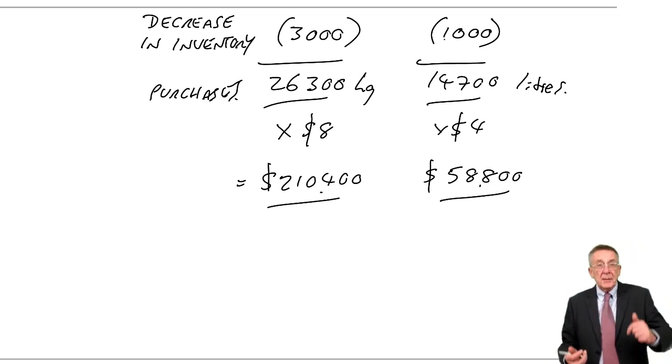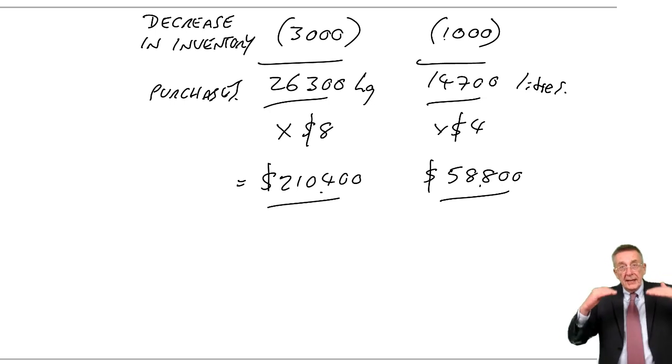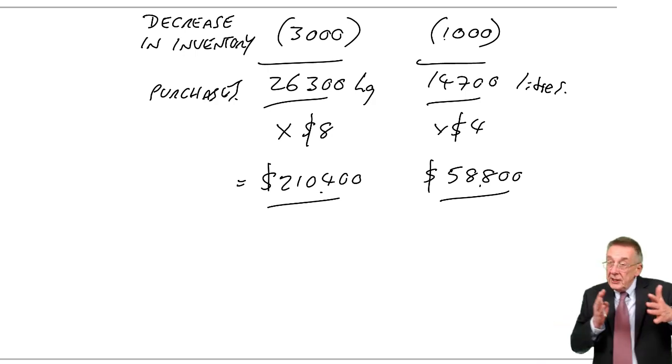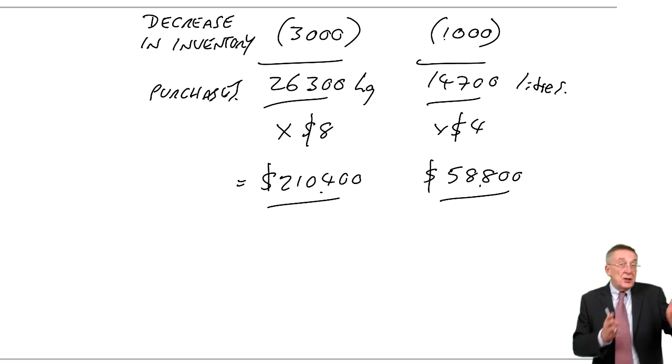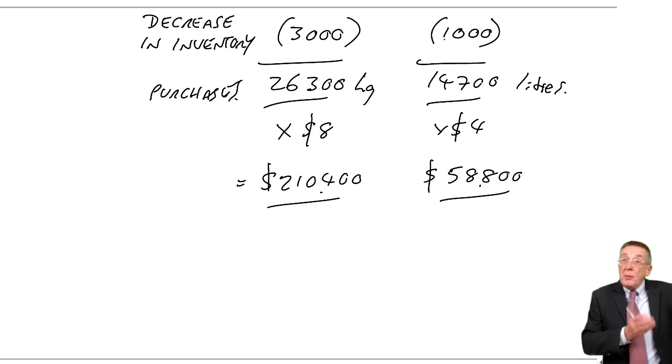So each one straightforward, but see how one budget leads to another budget. We've got this series of plans. We can't get material purchases until we know material usage. We don't know material usage until we know what the production is. We don't know what the production will be until we know what the sales are.